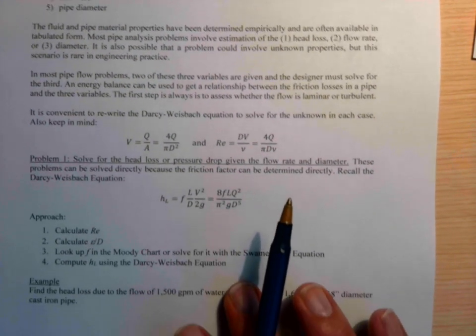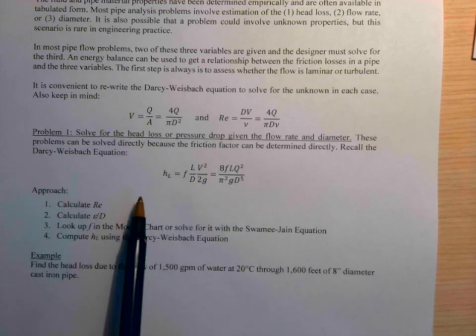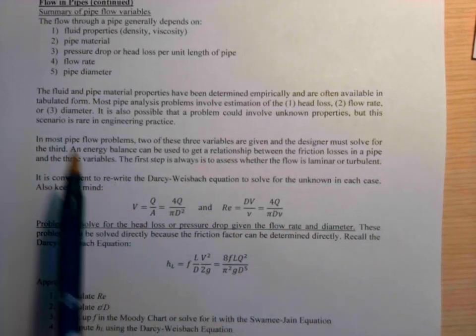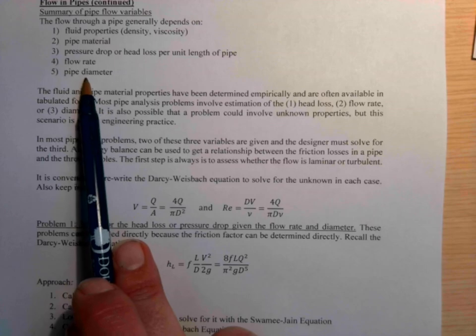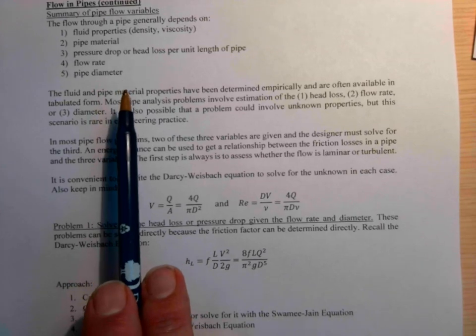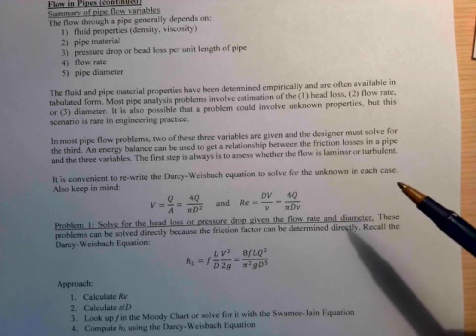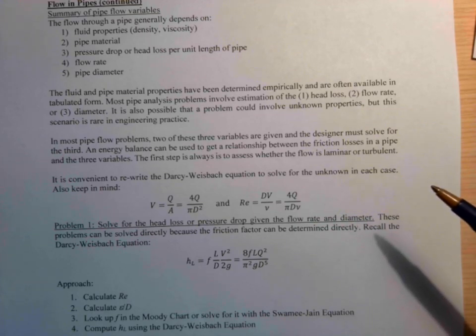Last time in class I talked about how to calculate the head loss, and then we went through and did the flow rate. The next video I'll do is on how to solve for the pipe diameter. This one is the hardest because the pipe diameter is a variable for the relative roughness and for the Reynolds number. So when you don't know either one of those things, it makes it more difficult to figure out what the friction factor is, but you can do it.